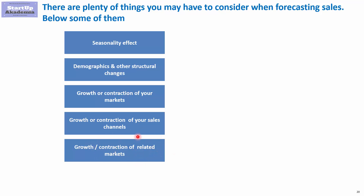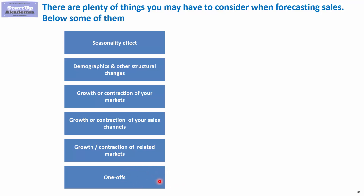Remember that there might be some one-offs in the market in which you work. This means that those one-offs should be removed from historical data and may be added back into the forecast if you know they may happen again. Most of those one-offs are related to unpredictable events or changes in law.